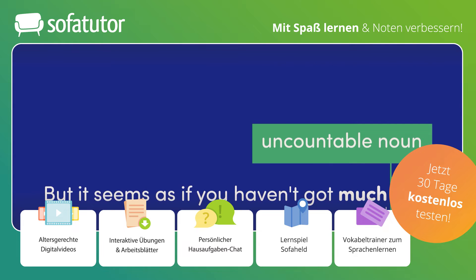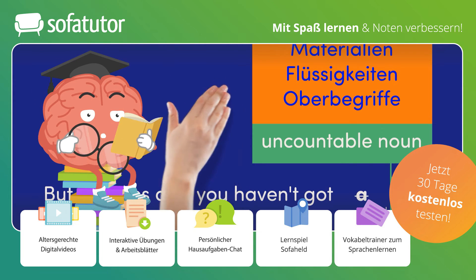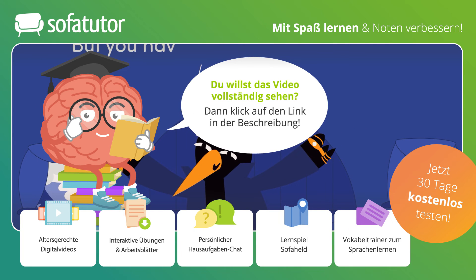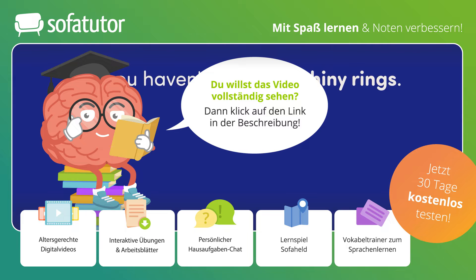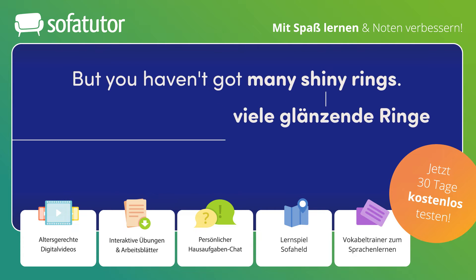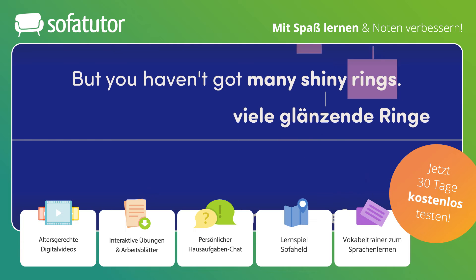Uncountable nouns sind oft Materialien, Flüssigkeiten und Oberbegriffe, vor die man keine Zahl stellen kann und die keinen Artikel haben. But you haven't got many shiny rings. Allerdings hast du nicht viele glänzende Ringe. Have you got much love? Hast du viel Liebe? Hier steht 'many', weil Ringe zählbar sind. Dort steht 'much', weil Liebe nicht zählbar ist.